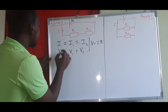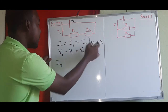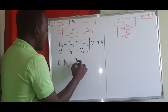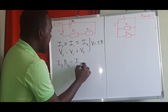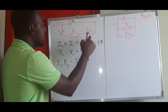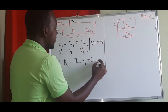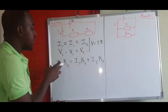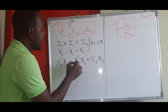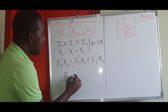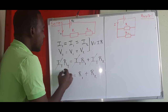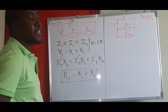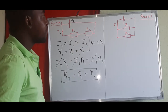Since the total current I_t is the same on all three sides, we can cancel it from both sides of the equation. This leaves us with R_t equals R1 plus R2. That's how we derive the total resistance equation for a series circuit — simple and straightforward.